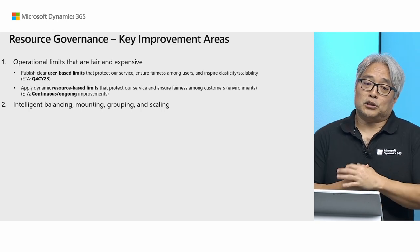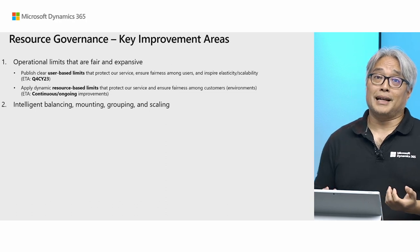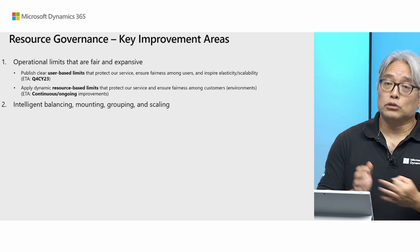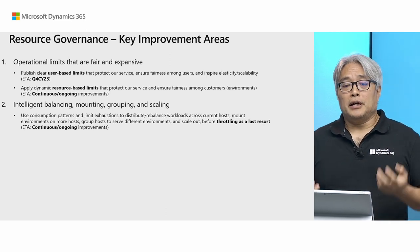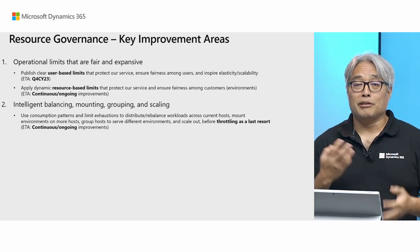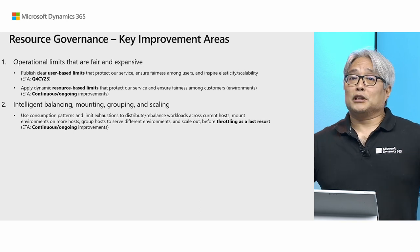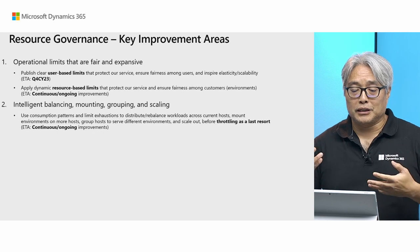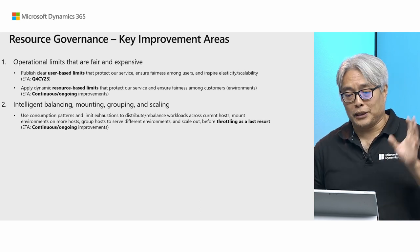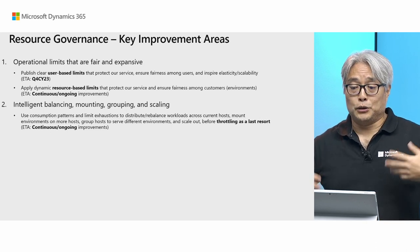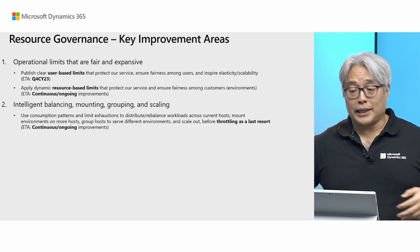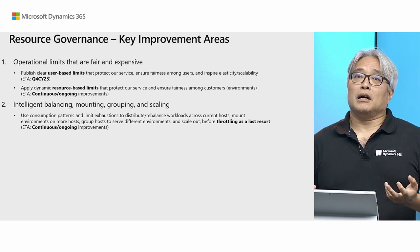The second thing we are able to improve with resource consumption tracking is the elasticity techniques — intelligent balancing, mounting, grouping, and scaling. The consumption pattern and limit exhaustion signals can be used to distribute or rebalance workloads more intelligently across mounted hosts, mount more environments on more hosts, and group hosts differently. For example, heavy-consuming tenants will go with less heavy-consuming tenants to balance each other out. We can also use limit exhaustion signals to scale out and add more hosts. The aim is to exploit all these techniques before actually throttling — throttling should be a last resort.